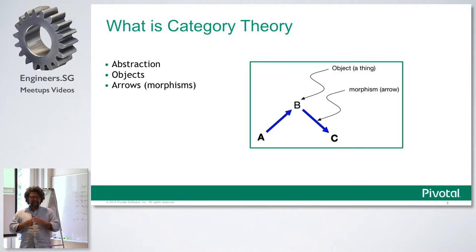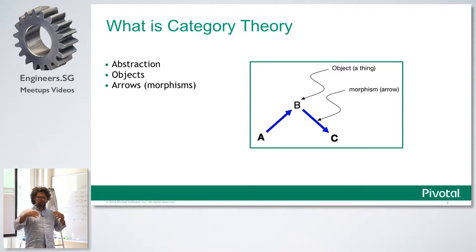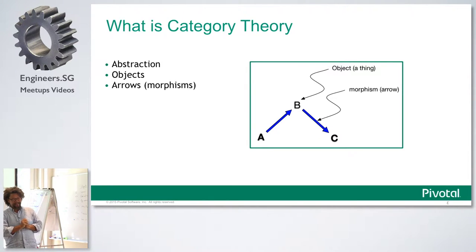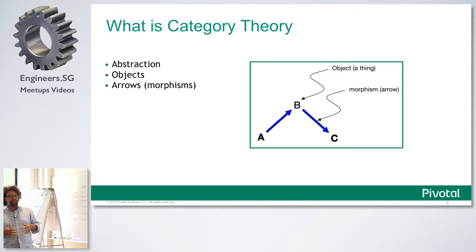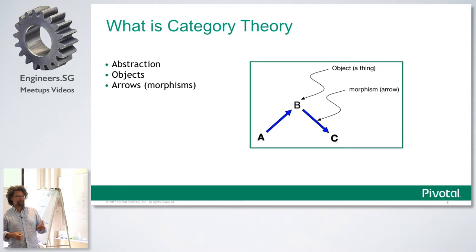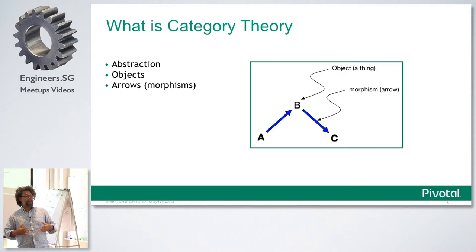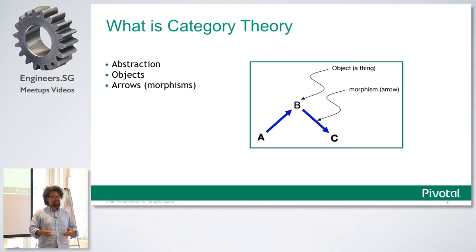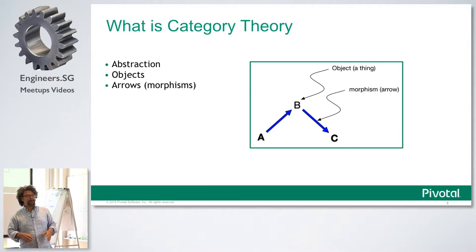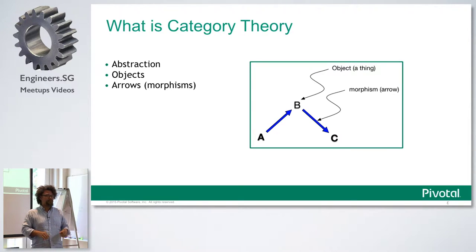So, what is category theory? In as simple terms as I could possibly explain it, I would start by saying that there's something programmers really love: abstraction. Programmers like to work with abstractions. We like to think in terms of abstractions, because it makes our jobs easier. It allows us to think about the larger issues without necessarily drilling down into the details.